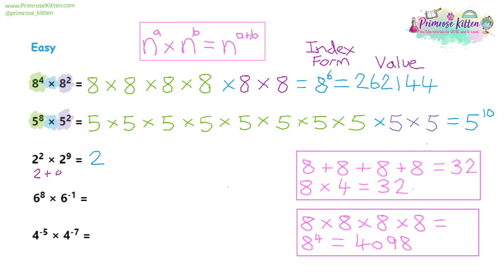So for the next one, we have two to the two times two to the nine. Now two plus nine gives us 11, giving us two to the power of 11. If you want to check, feel free to write out all of those twos and count them up.